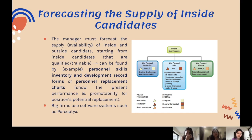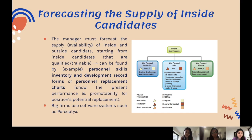The manager must also forecast the supply or availability of inside and outside candidates. Starting from inside candidates, those who are qualified or trainable can be found using, for example, personal skills inventory and development record forms, or personal replacement charts. Personal replacement charts show the present performance and promotability potential for positions. These often use software systems such as Perceptor. As shown in this figure, the personal replacement chart indicates which employees can be promoted to a higher job.